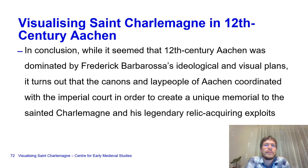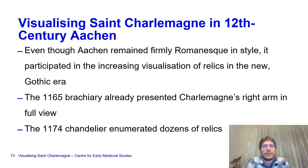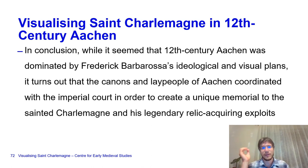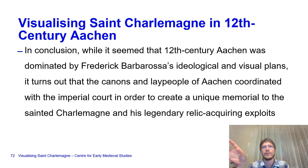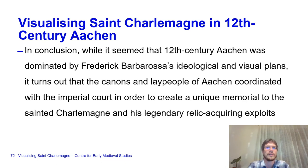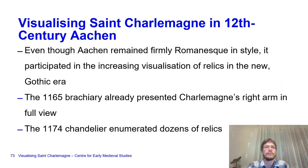In conclusion, while it seemed that 12th-century Aachen was dominated by Frederick Barbarossa's ideological and visual plans, it turns out that the canons and the lay people of Aachen coordinated with the imperial court in order to create a unique memorial to the sainted Charlemagne and his legendary relic-acquiring exploits. Essentially, it all seemed to be Frederick Barbarossa and imperial ideology, but in fact it is much more devotional—much more looking towards heaven than 20th-century scholars thought, as they were preoccupied with 19th-century ideological positions such as the supremacy of the state over the church, a typical problem of 19th-century Germany.